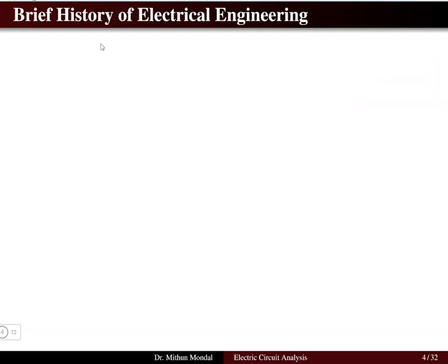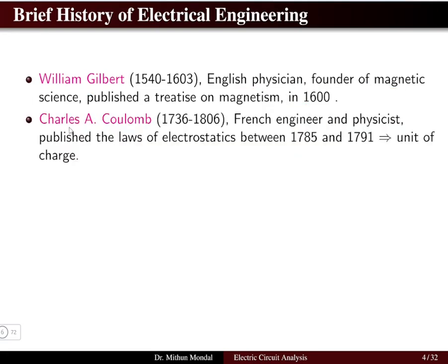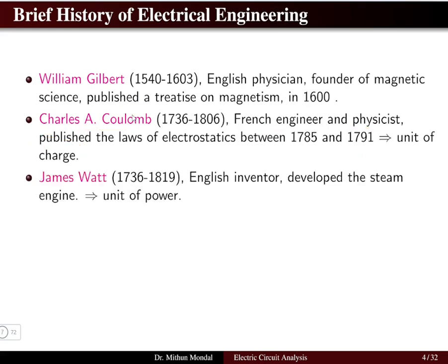Looking at the brief history of electrical engineering: William Gilbert was an English physician and founder of magnetic science who published a treatise on magnetism in 1600. Charles A. Coulomb, a French engineer and physicist, published the law of electrostatics between 1785 and 1791, and the unit of charge — the Coulomb — is named after him.